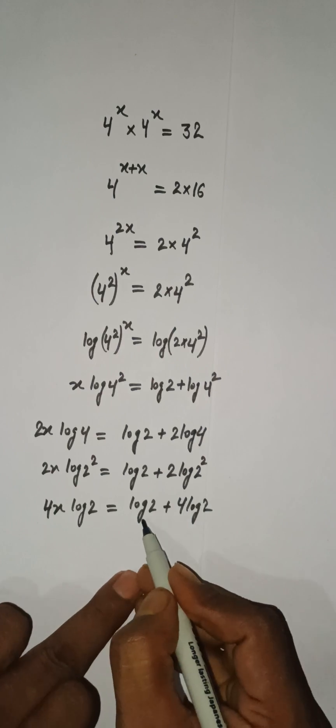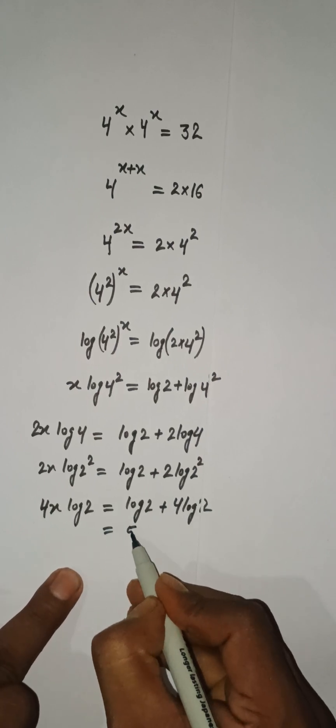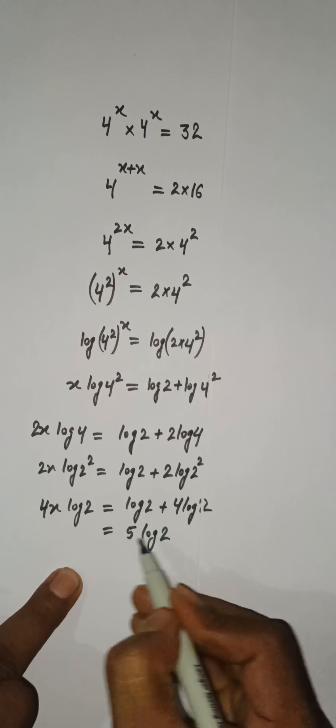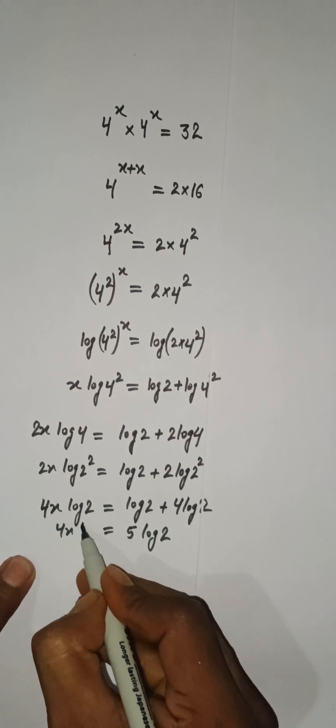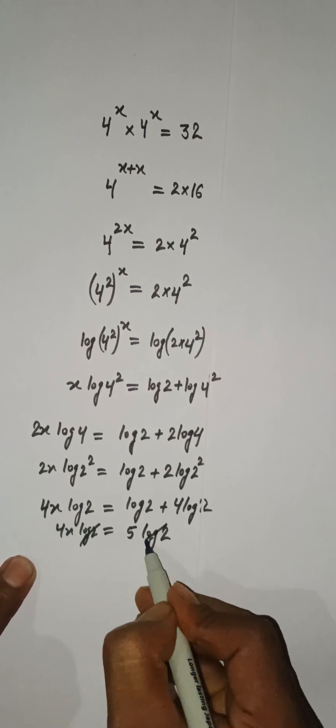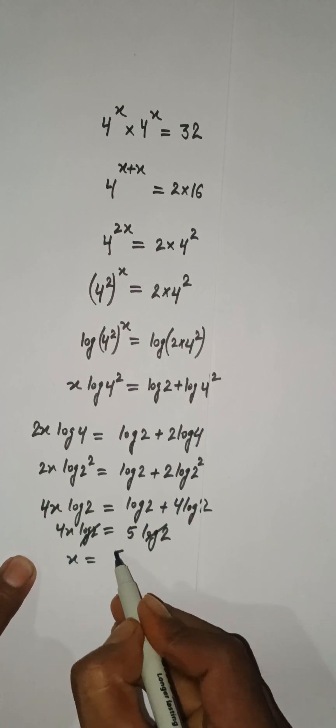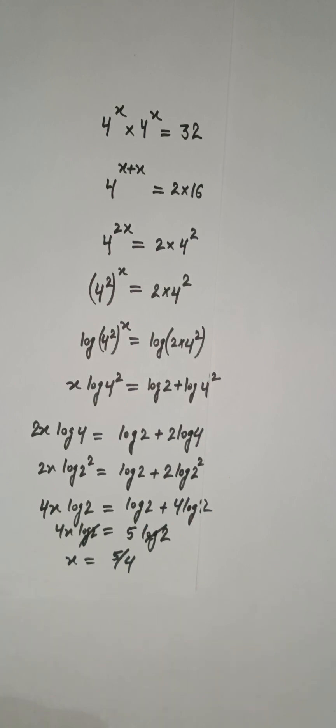So you can see that we have log 2 and 4 log 2 will be 5 log 2, and here we have 4x log 2. So log 2 log 2 cancel, so x equals 5 upon 4 and this is the solution of this problem.